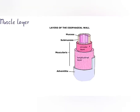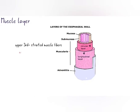Let's see the muscle layers. The inner layer is circular muscle and the outer is longitudinal muscle fibers. The upper part of the esophagus consists of striated muscle fibers. The middle part consists of striated and smooth muscle. The lower part consists of smooth muscle fibers.